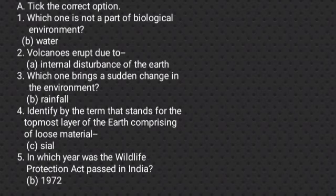Question number one A: Take the correct option. Which one is not a part of biological environment? There are four options: A. Plants, B. Water, C. Animals, D. Human beings. Plants, animals and human beings are parts of biological environment. Here, water is not part of the biological environment. So the correct answer is B. Water.